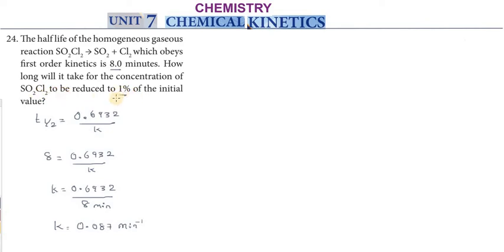The concentration of sulfur chloride is to be reduced to one percent of the initial value. The half-life is 8 minutes and k is 0.087 per minute. Now we need to find how long it will take, so we use the first-order integrated rate law.